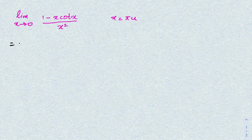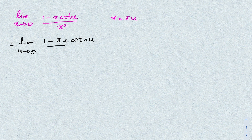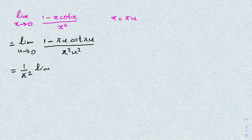When x approaches 0, u also approaches 0. Substituting, we get the limit of (1 minus π·u·cotangent(π·u)) over (π²·u²). Since π² is a constant, we can take it outside the limit, giving (1/π²) times the limit as u approaches 0 of (1 minus π·u·cotangent(π·u)) over u².